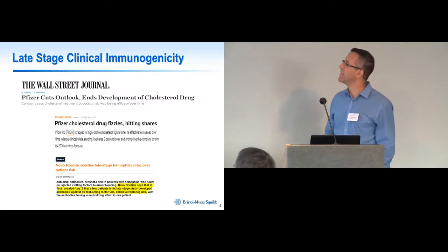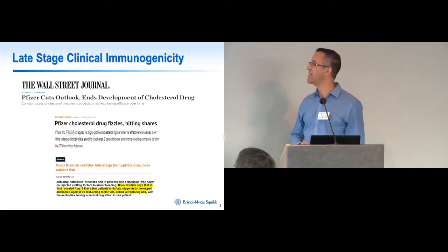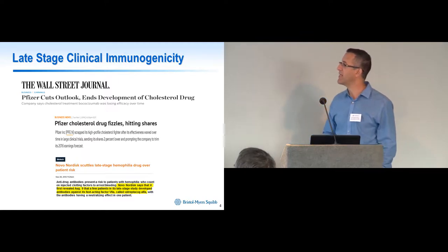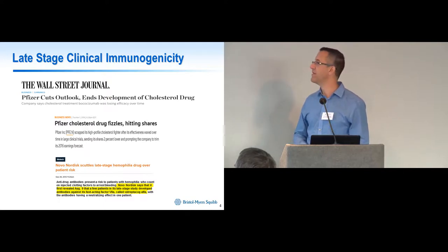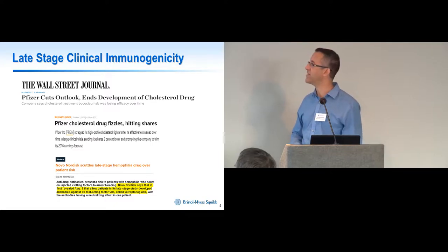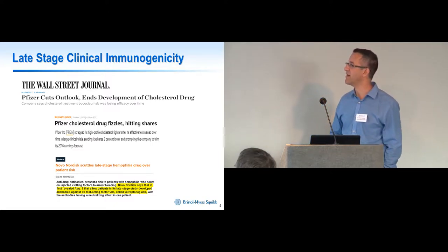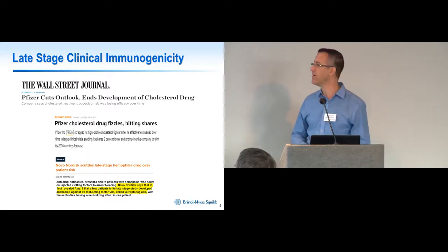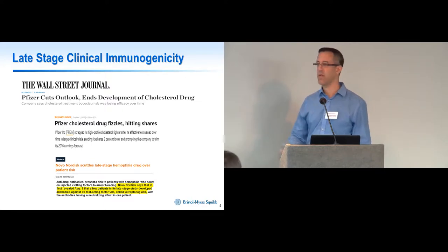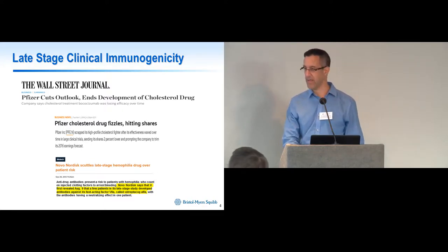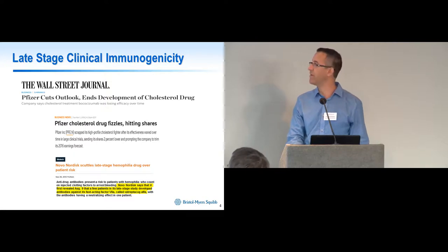Recently immunogenicity has really been in the news a lot. There are a couple of stories from the last few years that even made the Wall Street Journal, showing some late development programs that were stopped in part due to anti-drug antibodies. On the top is a PCSK9 drug whose development was stopped by Pfizer, and on the bottom is a factor 7 antibody by Novo Nordisk. As a lead selection and optimization group, we're really trying to see what we can do to predict and eliminate this from our drug development programs.